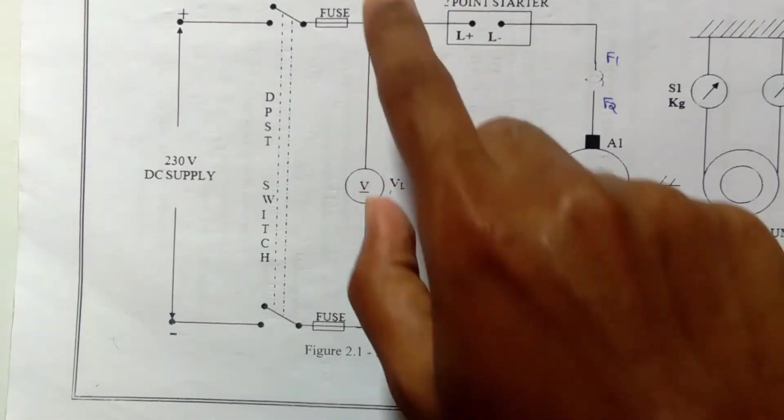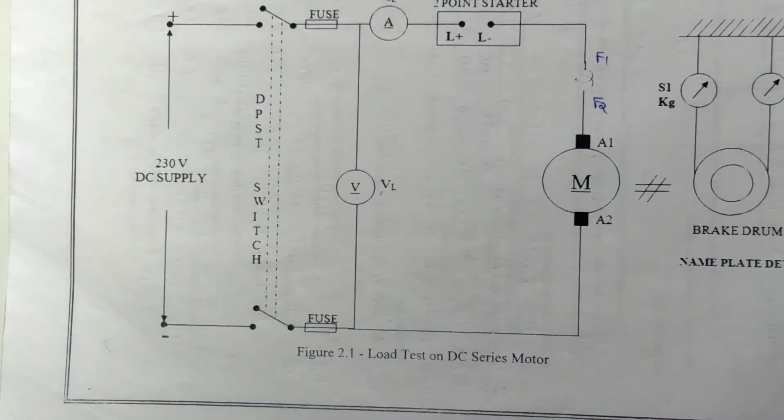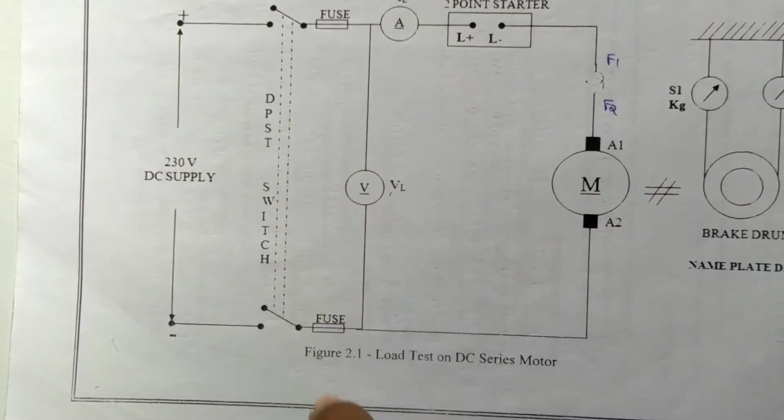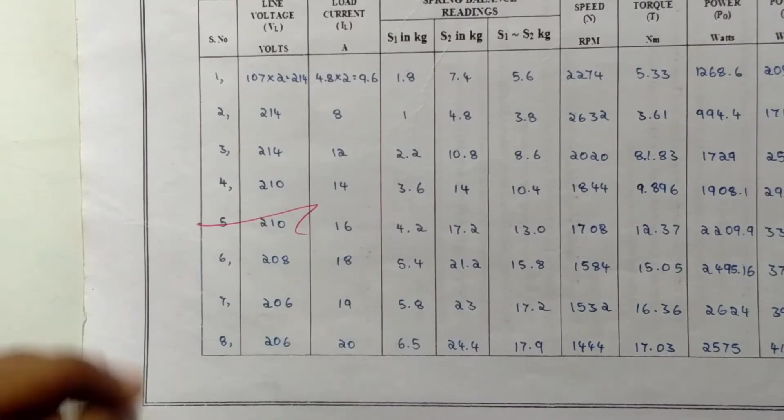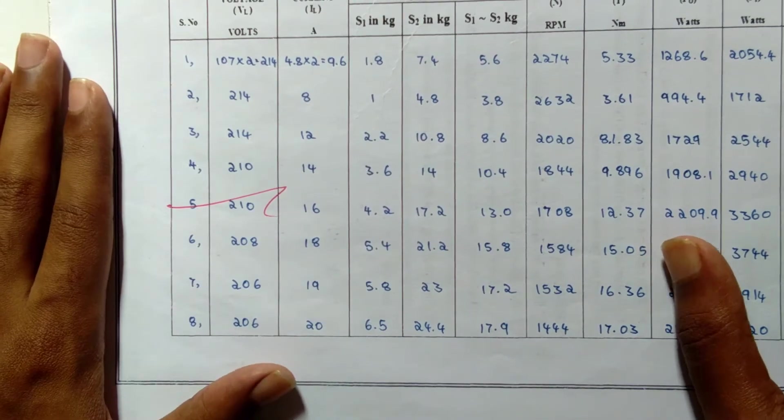The voltmeter, ammeter, and spring balance readings are noted. Now the same procedure is repeated for various loads up to the rated value of the current. The motor is switched off after reducing the load on the brake drum. The performance characteristics are drawn using the tabulated readings and calculated quantities.